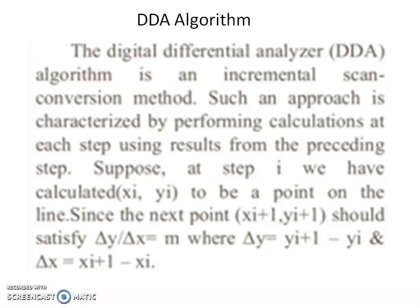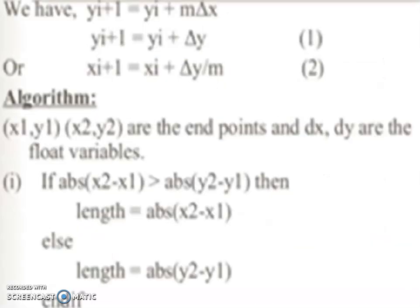Suppose at step i we have calculated xi,yi to be a point on the line. Since the next point is xi+1, yi+1, it should satisfy Δy/Δx = m, where Δy = yi+1 - yi and Δx = xi+1 - xi. And yi+1 = yi + mΔx, that is yi+1 = yi + Δy, or xi+1 = xi + Δy/m.